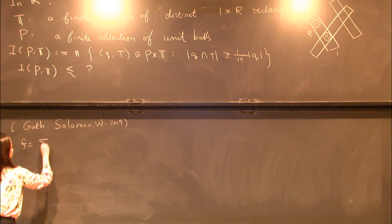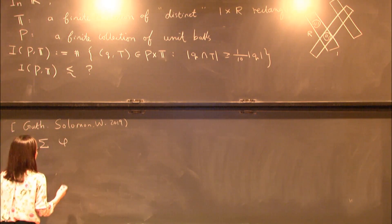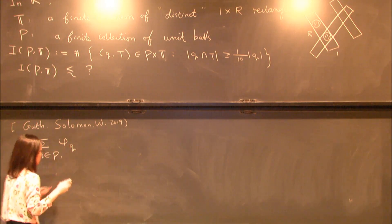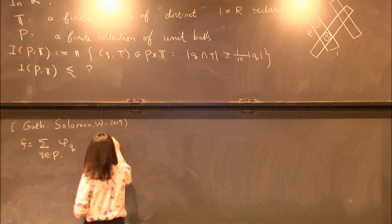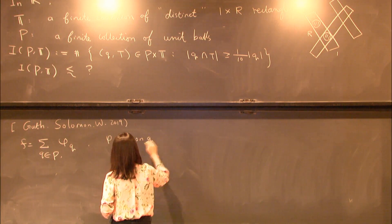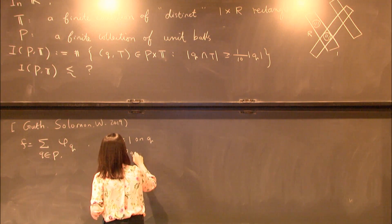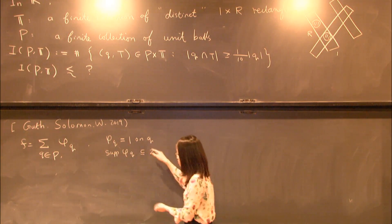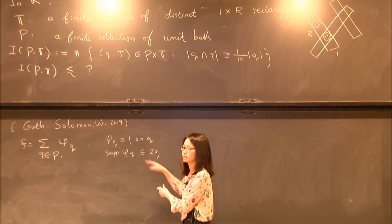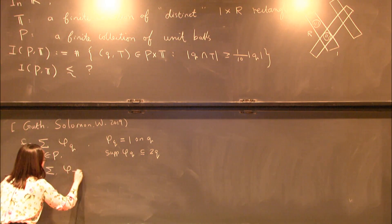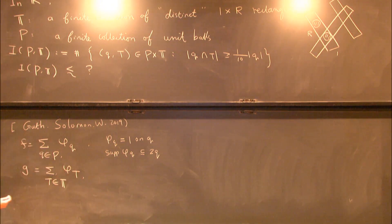Let f be the sum over functions phi_q. Phi_q is a bump function at each unit bond q — phi_q is 1 on the unit bond q, and the support of phi_q is inside 2 times q. So essentially it's like the characteristic function of q, made slightly smoother. And then let g equal the sum over phi_t.